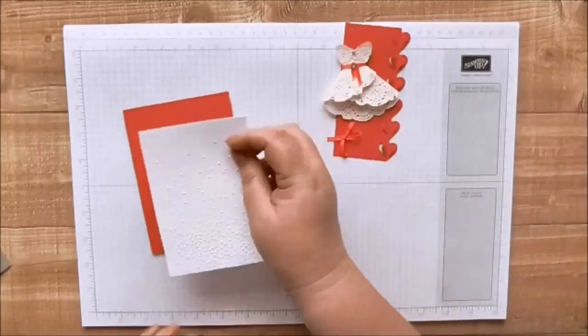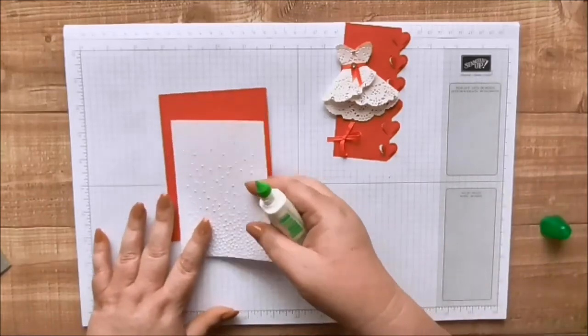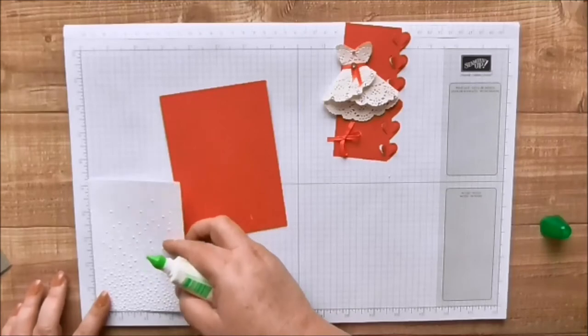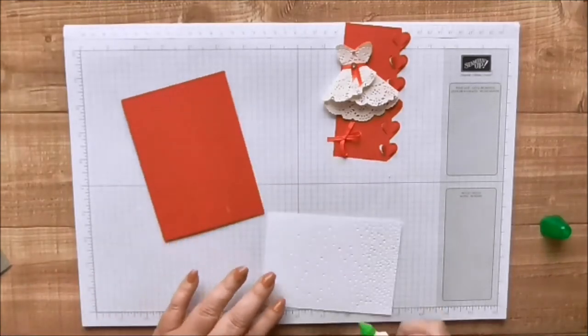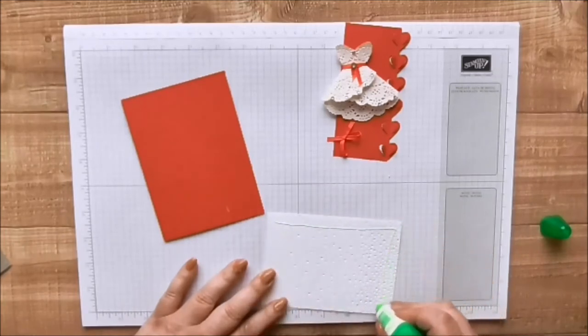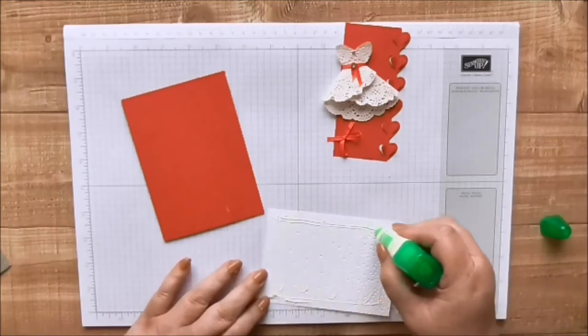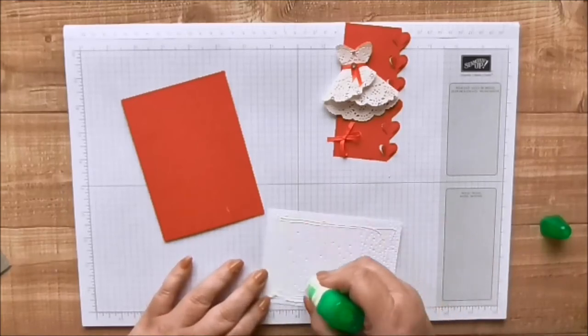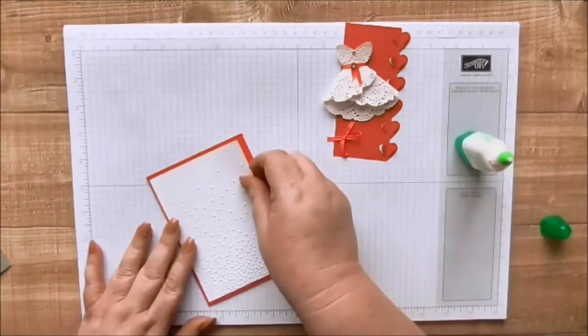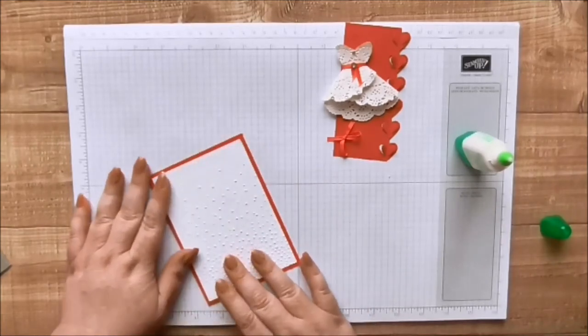Then I've taken some Whisper White and again this was just a scrap and off cut and this is three and three quarters by five and a quarter. What I did with that was I just ran it through the Big Shot in an embossing folder in the Softly Falling. I think Softly Falling is still in the current catalogue.